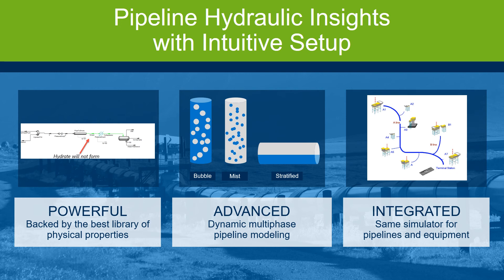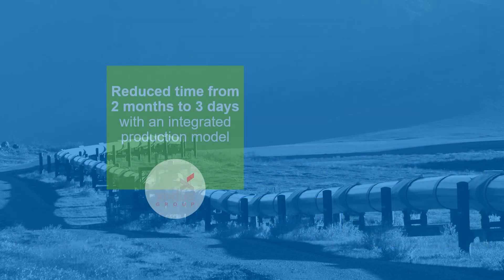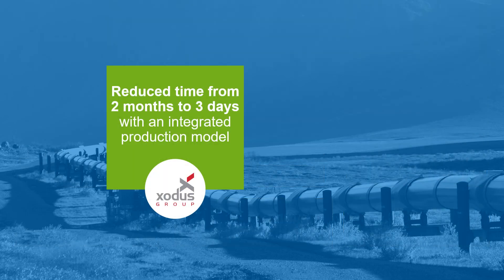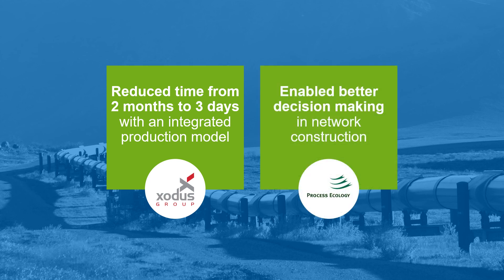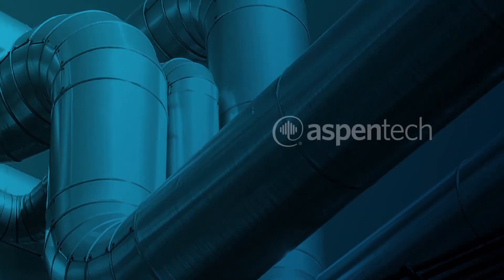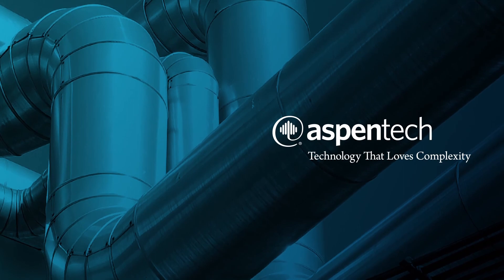By using our pipeline hydraulics and network modeling capabilities, organizations have seen great benefits. Exodus reduced the time to complete an analysis of an integrated production model from two months to three days. Process Ecology used Aspen HYSYS Hydraulics to create a strategic planning tool for a system with 32 wells and two plants to enable better capital decisions. Imagine the value of this application for your organization. Learn more at AspenTech.com.